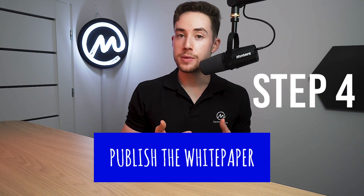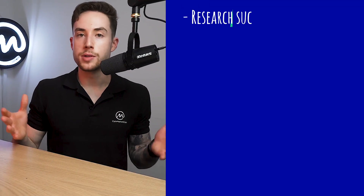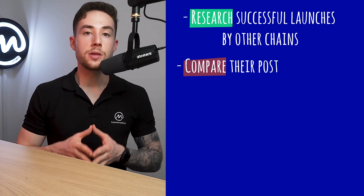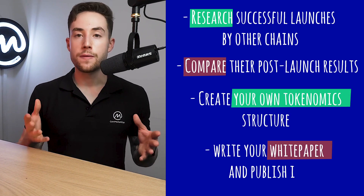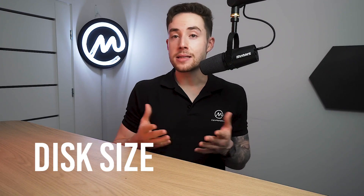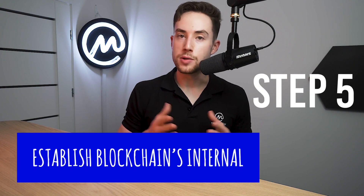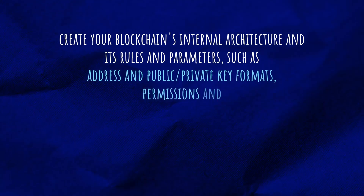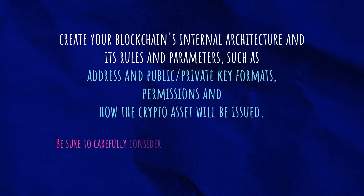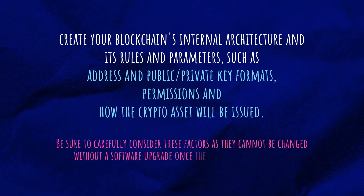Step four: publish your white paper on your website and social media. With the earlier steps behind you, you should really understand what you're trying to build inside and out. It's time to put this information together in your own manifesto. Research successful launches by other chains and figure out what they did right and wrong. Compare their post-launch results with their tokenomics and network emissions, then create your own tokenomics structure in response. Write your white paper and publish it on your website, then share it far and wide. Step five: design the nodes. Nodes are the building blocks of a blockchain that store and verify your transactions — get the necessary hardware such as processors, memory, and disk size if required. Then establish your blockchain's internal architecture, including its rules and parameters such as address formats, public-private key formats, permissions, and how the crypto asset will be issued. Be sure to carefully consider these factors as they cannot be changed without a software upgrade once the platform is running.